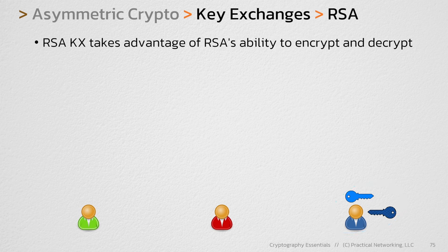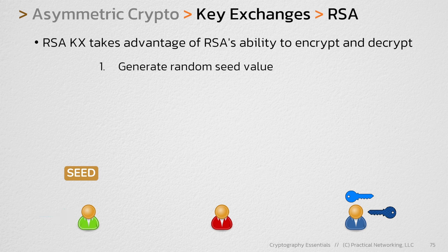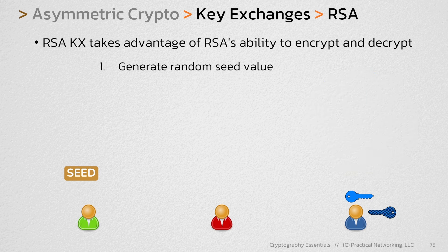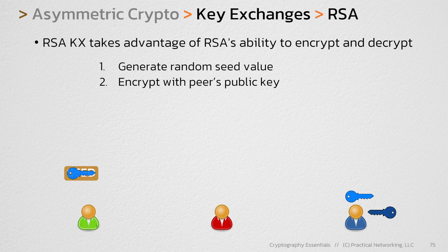Here's how it works. The green user is going to randomly generate some sort of seed value. This is just an arbitrary set of ones and zeros that has been generated at random by the green user. Then, the green user is going to take their peer's public key and encrypt that seed value. This will produce some sort of ciphertext. This ciphertext will then be sent across the wire.